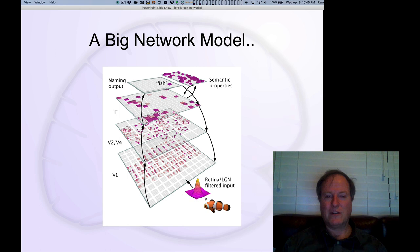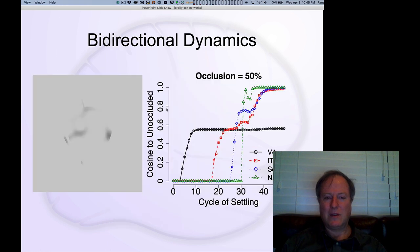We took our big bidirectional neural network model that has these excitatory connections going up and back down and we tested it on its ability to recognize those kinds of shapes. Here's another example, see if you can figure out what that is. We can see that initially the model was making some guesses as to what it was seeing, but it was only getting what we can say is like 50% of the way there. The object was actually occluded 50%, so that's just lining up with the amount of occlusion.